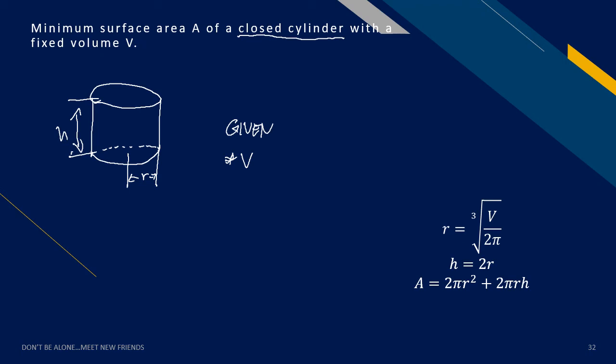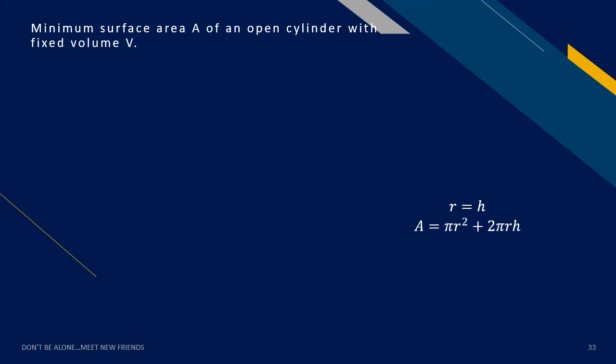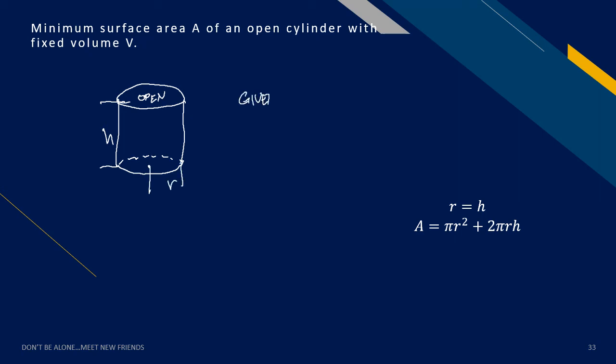Minimum surface area of an open-top cylinder with fixed volume V. When the top is open, r = h and surface area = πr² + 2πrh.